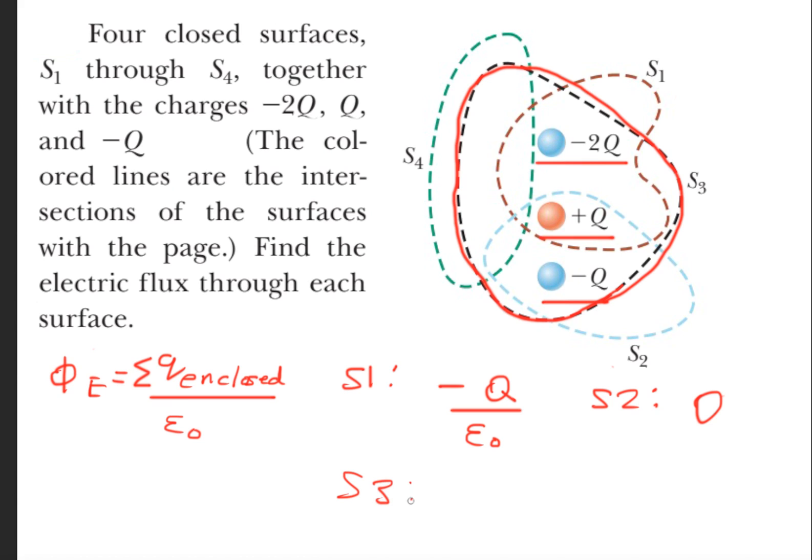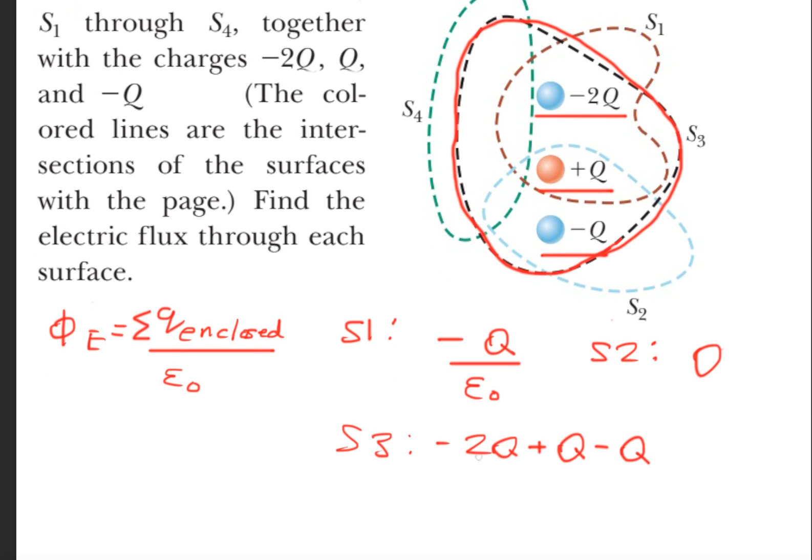So for surface three, we have minus 2Q charge plus Q and minus Q, all divided by epsilon naught. Now if we simplify this, we're simply left with minus 2Q over epsilon naught because these will cancel.